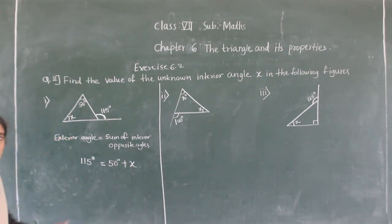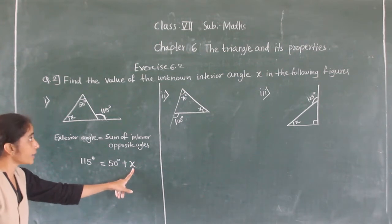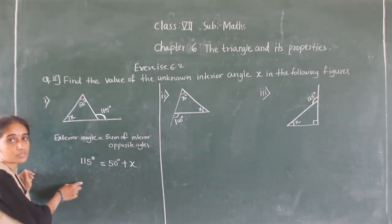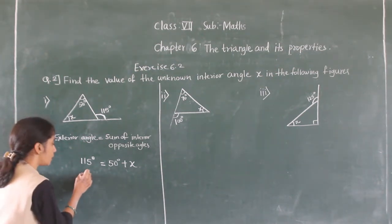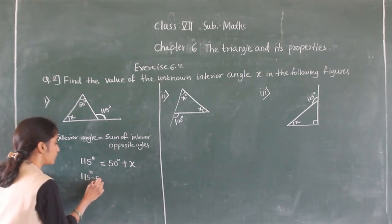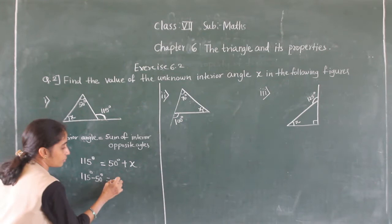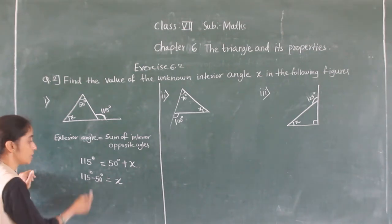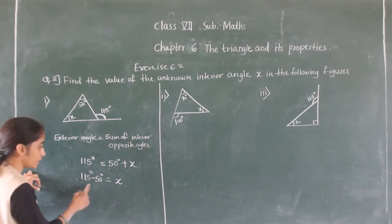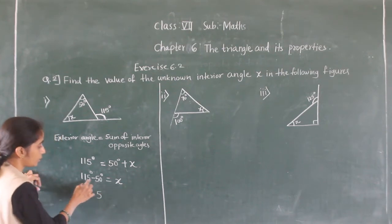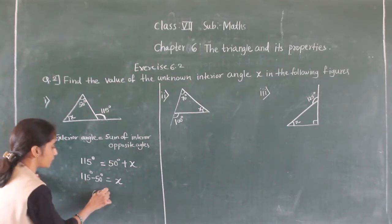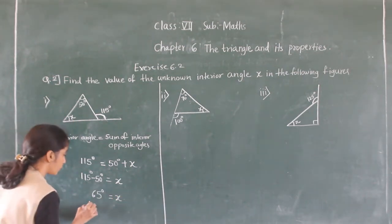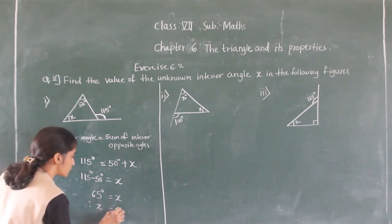Now we use transposition to find angle x. We transfer 50 degrees to the other side, where it becomes minus. So x equals 150 minus 50 degrees. That gives us 5 minus 0 is 5, and 1 minus 5 gives 6 — so 65 degrees. Therefore, angle x is equal to 65 degrees.